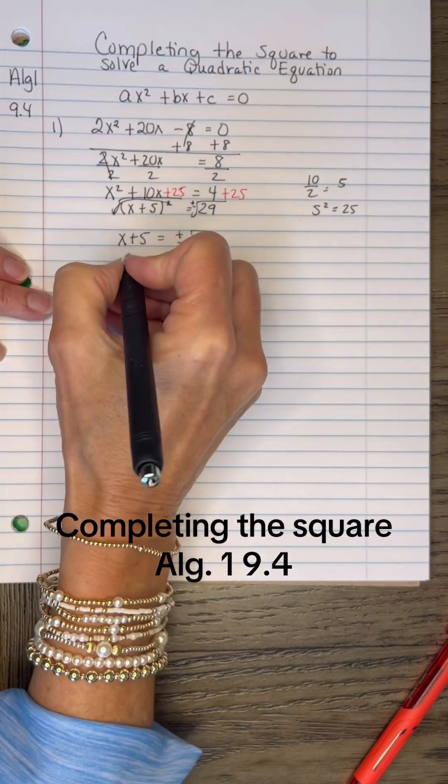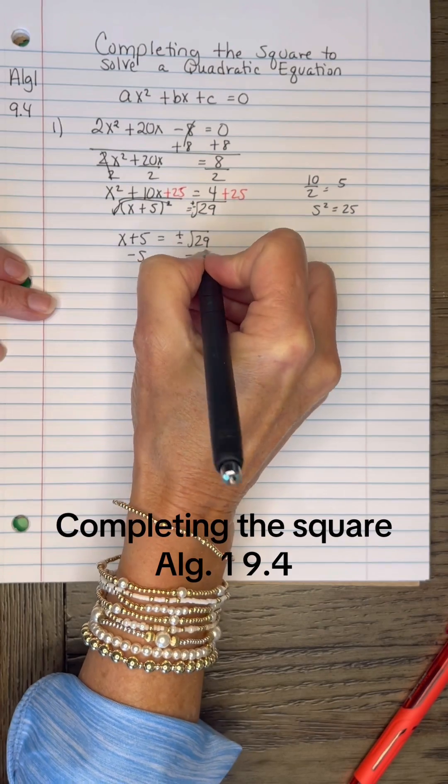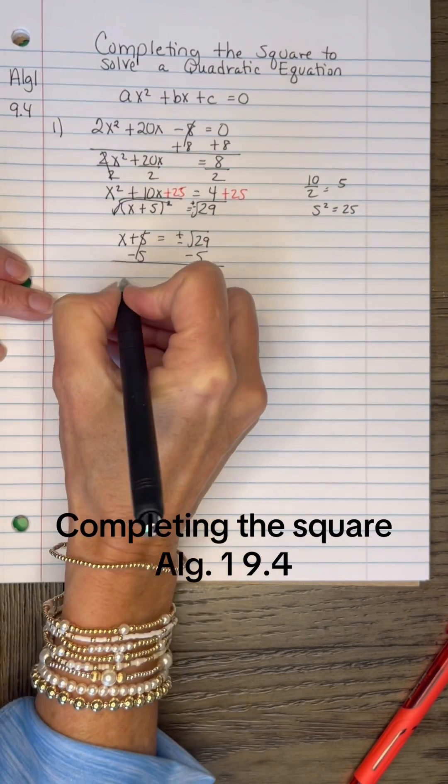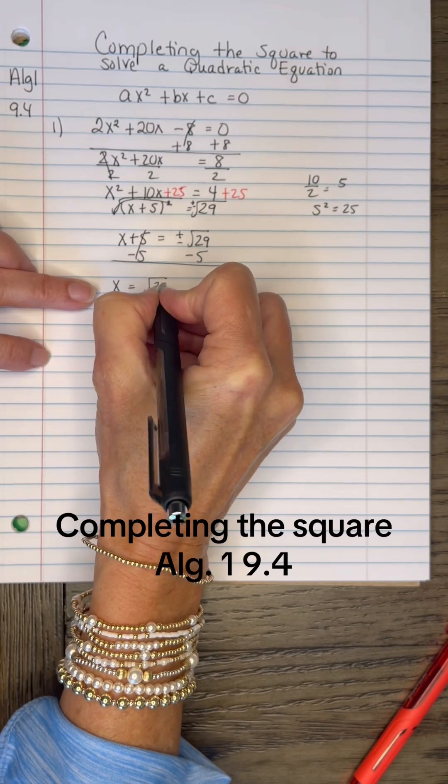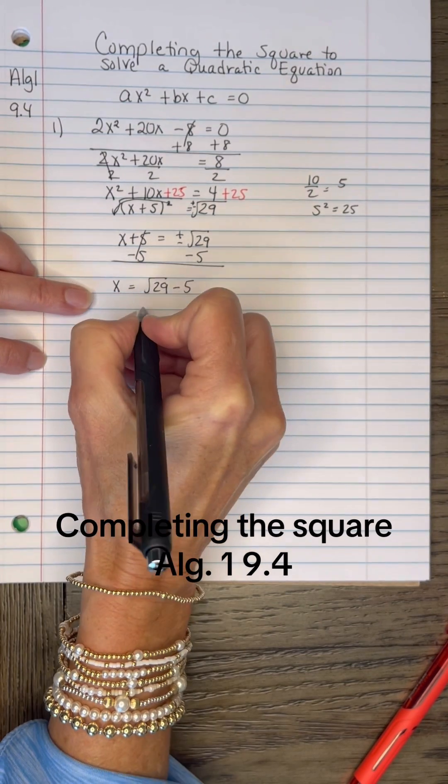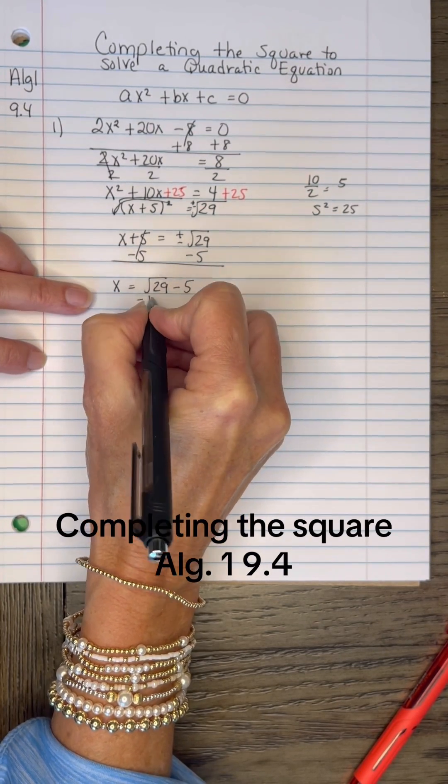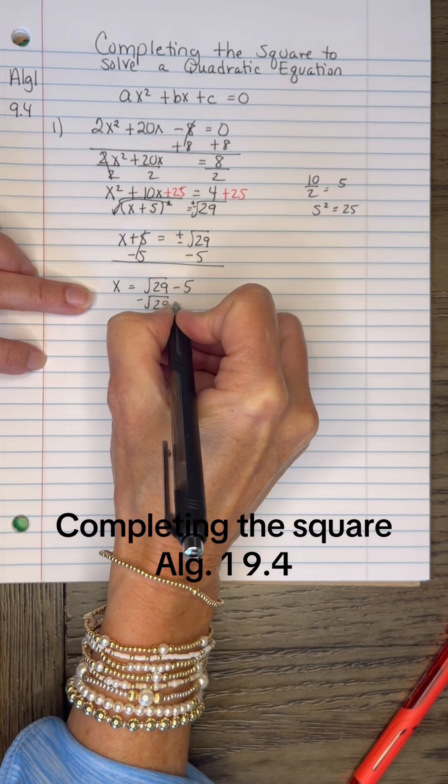To get the X alone now, I will subtract 5 from both sides, and I have X equals the positive square root of 29 minus 5, and also the negative square root of 29 minus 5.